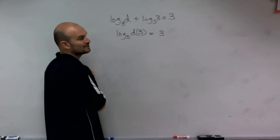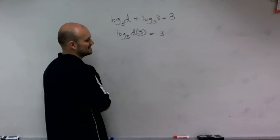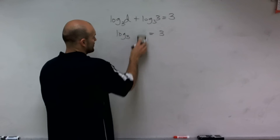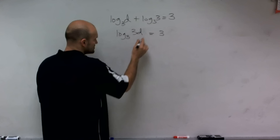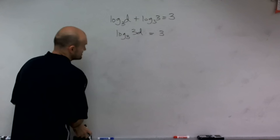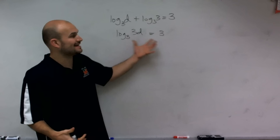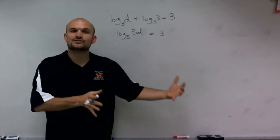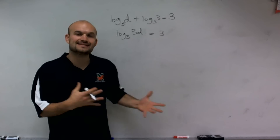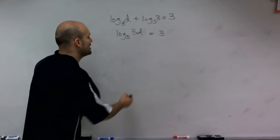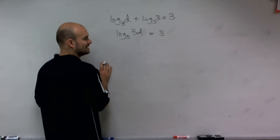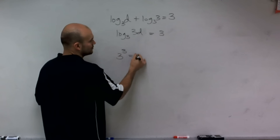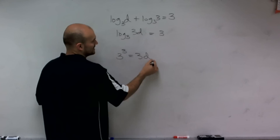We'll write d times 3 as 3d. Now, what's important about this is that I now have my equation written as a single logarithm, so I can transfer it over to exponential form. In exponential form, I have 3 cubed equals 3d.